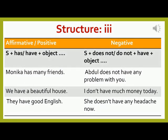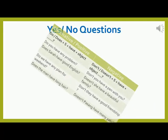Now Structure 3 — Affirmative: Subject + has or have + object. Examples: 'Monica has many friends.' / 'We have a beautiful house.' / 'They have good English.' Negative: Subject + does not or do not + have + object. Examples: 'Abdul does not have any problem with you.' / 'I don't have much money today.' / 'She doesn't have any headache now.' Yes-no question — Affirmative: Do or does + Subject + have + object. Examples: 'Do you have any problem?' / 'Does Shira have good English?' / 'Do we have any plan for the weekend?' / 'Does the man have long hair?'